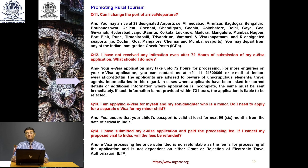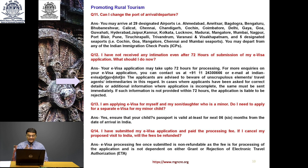If you have not received any intimation even after 72 hours of submission of your E-Visa application, your application will take up to 72 hours for processing. For more enquiries, you can contact on the number 91-11-2430-0666 or email at indianevisa@gov.in. Be aware of unscrupulous elements, travel agents and intermediaries — do not talk to any brokers. If correct details or additional information are required and not provided within 72 hours, the application is liable to be rejected and you will have to apply again.